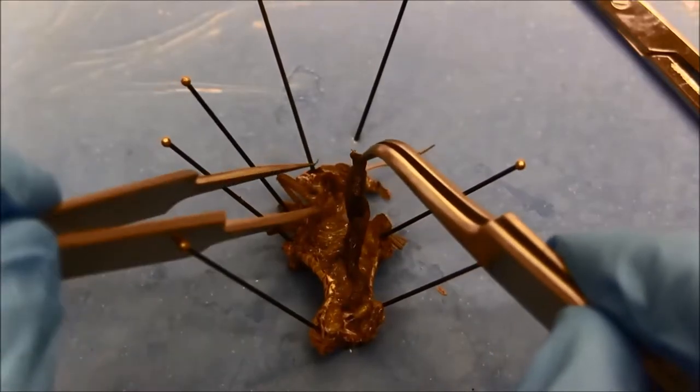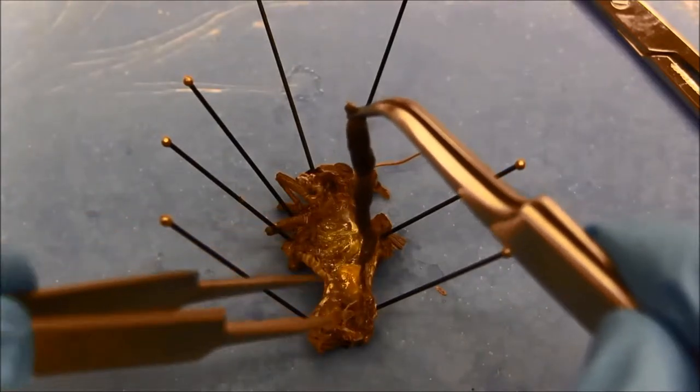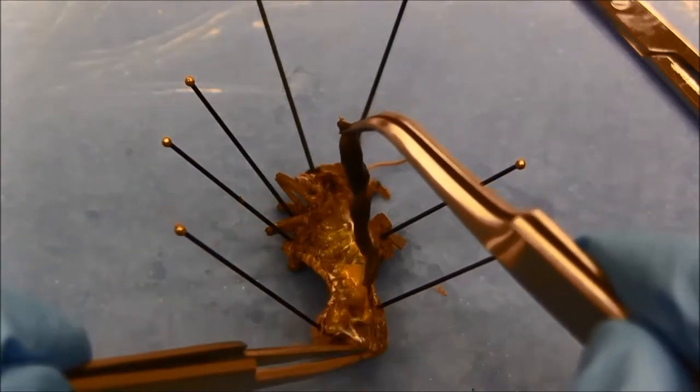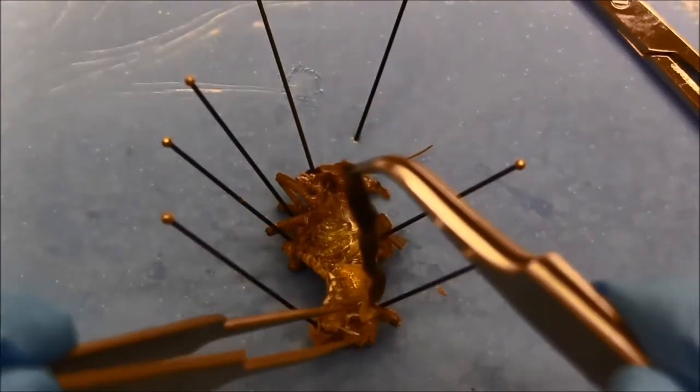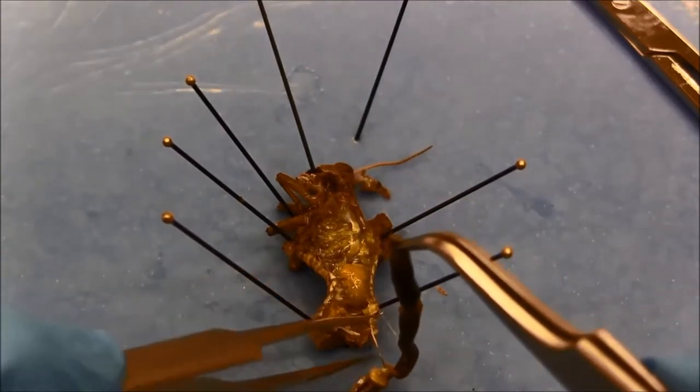I carefully pull out the digestive system. I have a grasshopper male here. If you dissect a female, you might want to remove all the ovaries and fat bodies before you pull out the gut.